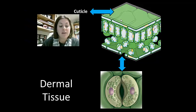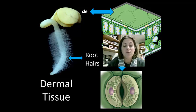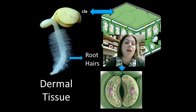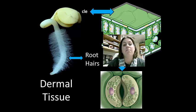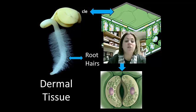A specialized type of dermal cell in the roots is the root hairs. These root hairs increase the surface area of the roots so that they can absorb the greatest amount of water and minerals possible.